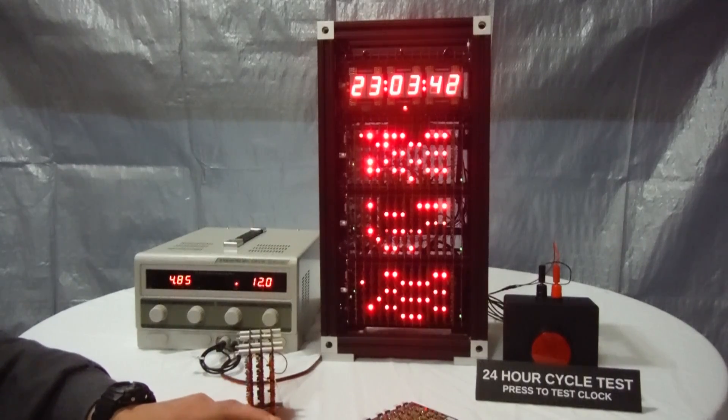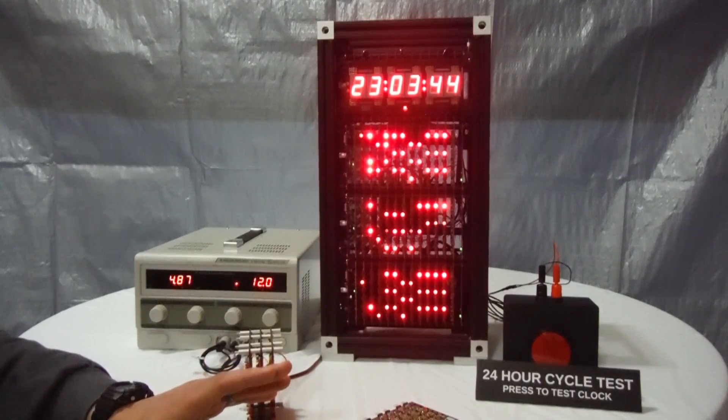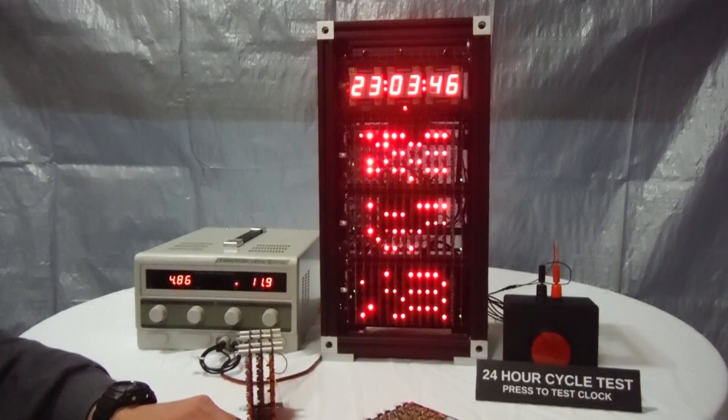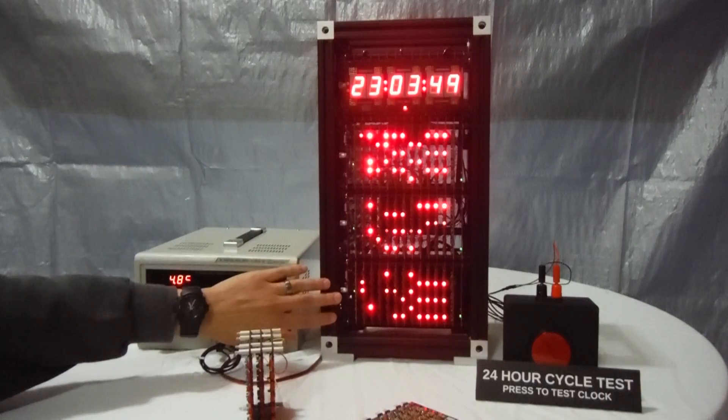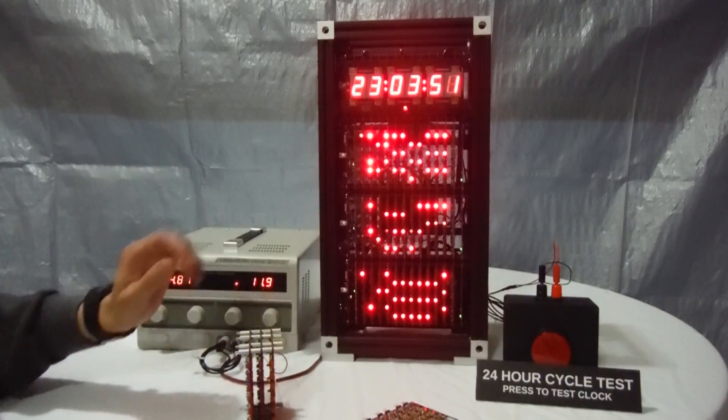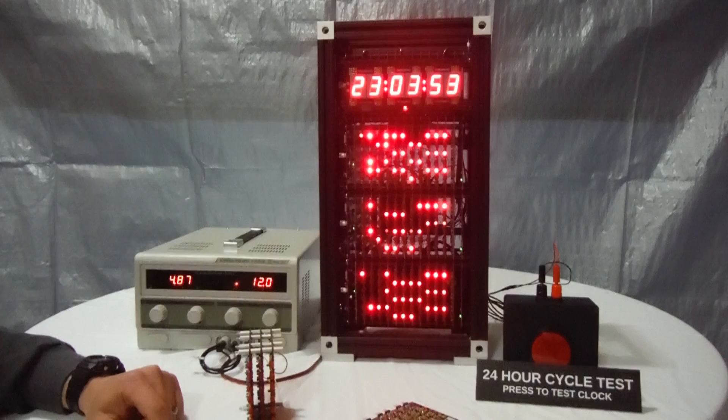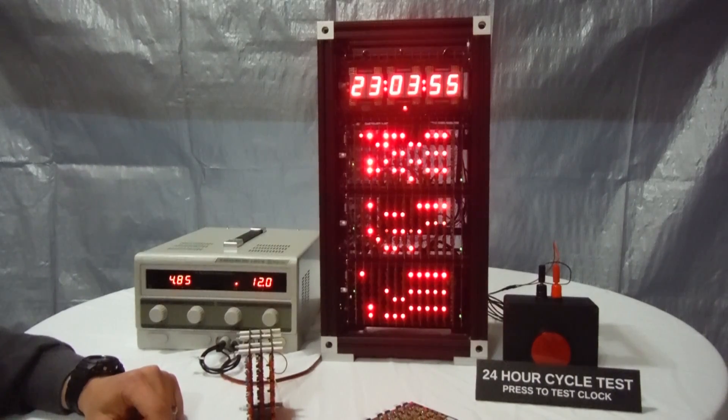If I press it, the clock will cycle through a full 24 hours in 28.8 seconds. That means the seconds counter will be running at about three kilohertz. This version of diode logic maxes out at about 3.3 kilohertz clock frequency, so this will be pushing it.